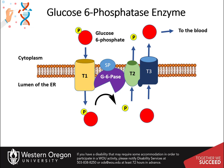This serves as the final step in the gluconeogenic pathway. Glucose 6-phosphate is transported into the lumen of the endoplasmic reticulum through transporter T1. The glucose 6-phosphatase then cleaves the phosphate from the substrate, releasing inorganic phosphate and glucose. The inorganic phosphate is then transported back into the cytoplasm through transporter T2, and glucose is transported through transporter T3.